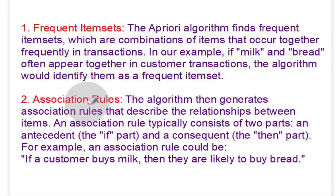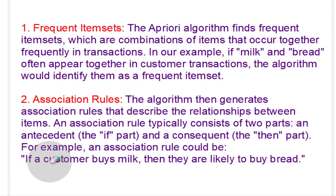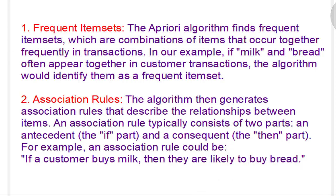What is an association rule? The algorithm then generates association rules based on the relationship between items. The rule consists of two parts: if and then. The thing which comes after 'if' is called the antecedent, and the thing which comes after 'then' is called the consequent. For example, if a customer buys milk — that is the antecedent — then they are likely to buy bread — that is the consequent. So we make this rule: if a person buys milk, then they are likely to buy bread.